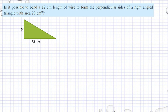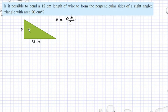The area of a triangle is the base times height divided by 2. Our area is 20 square centimeters. So that means we have 20 equals the base, 12 minus X, multiplied by the width X, divided by 2.